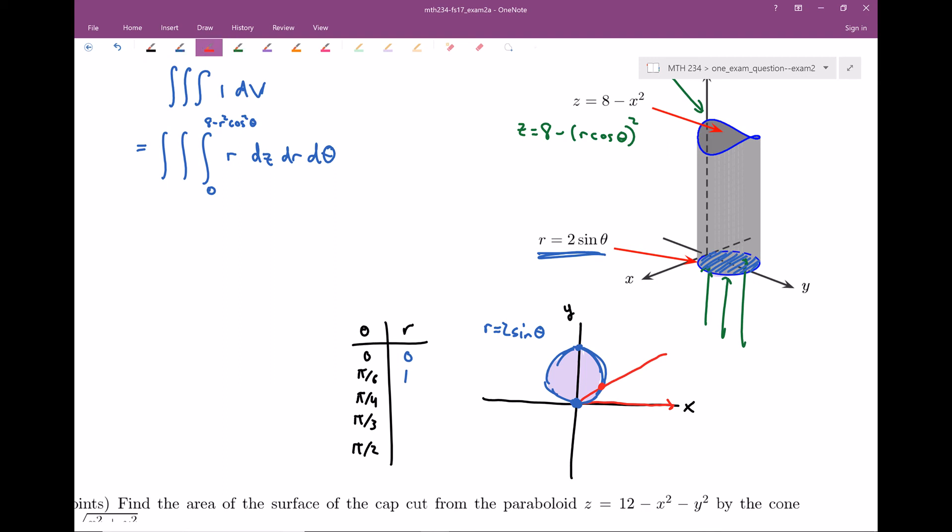Next one up, you could do pi over four, you could do pi over three. Let's do pi over two really quick and make sure that this is seeming to be correct. So at pi over two, we would have two times sine of pi over two. Sine of pi over two is going to be one, so two times one is going to be two.